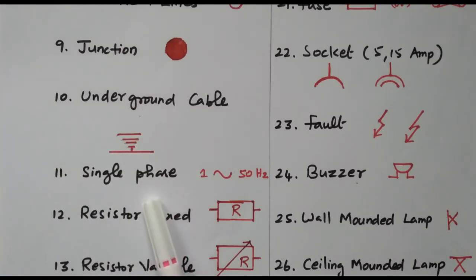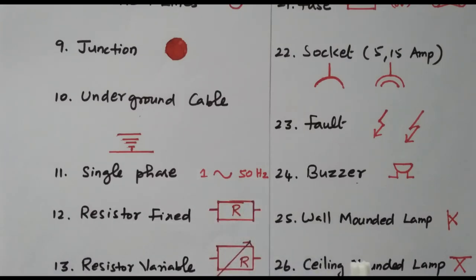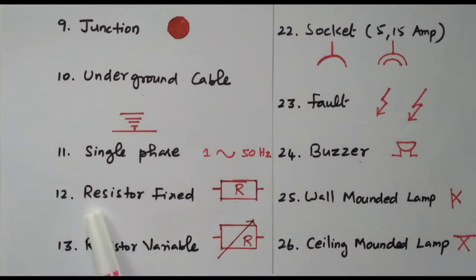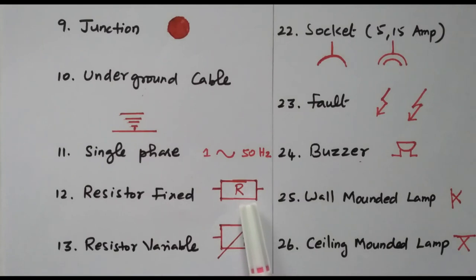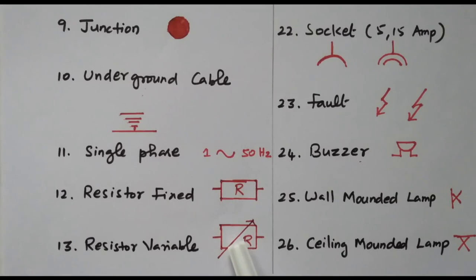Then single phase — only one phase available — is the same as AC but represented by the number one, meaning only one phase out of three phases is available at 50 Hz. Then the resistor: a fixed resistor is shown within a box with R. If a line is added, it becomes a variable resistor, meaning we can vary the resistance value.